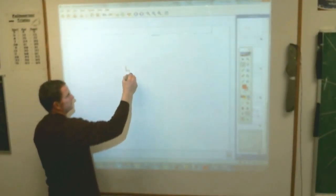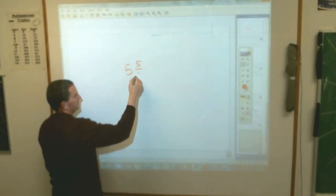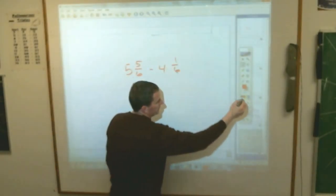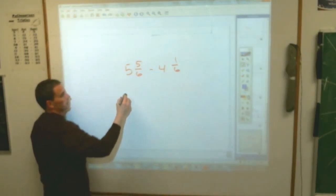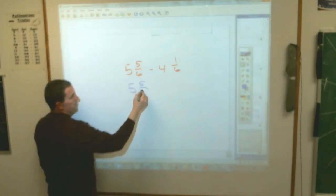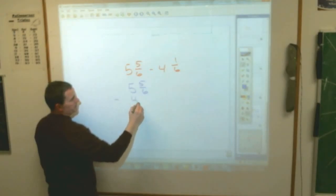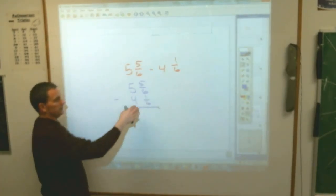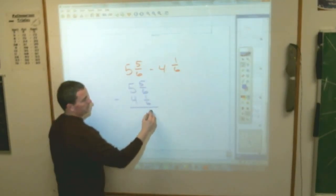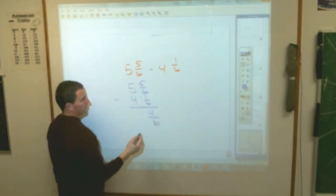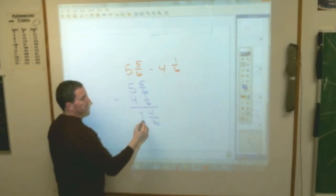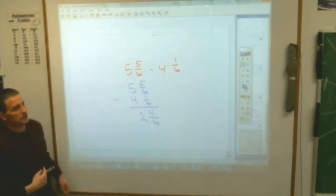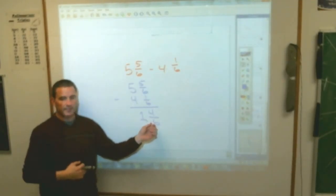5 and 5 sixths minus 4 and 1 sixths. And everybody knows your first step to doing this is to write it up and down. If you do 5 and 5 sixths and subtract 4 and 1 sixths from it, what is 1 sixths from 5 sixths is 4 sixths and 1 from 4 or 4 from 5 is 1. If you wrote that as your answer, it's going to be wrong because the fraction 4 sixths can be reduced.